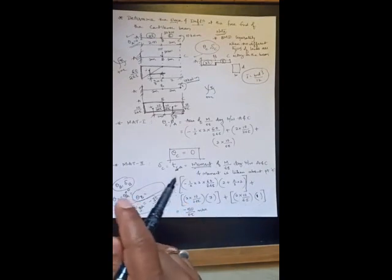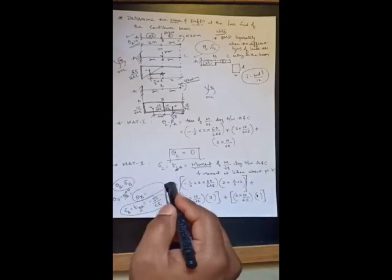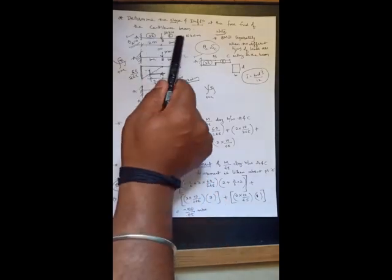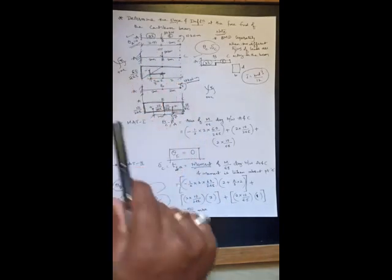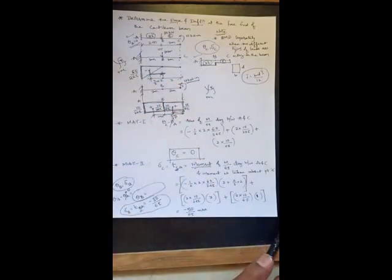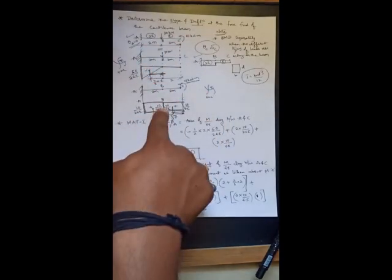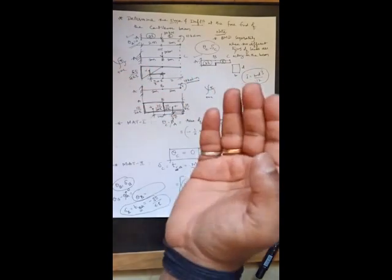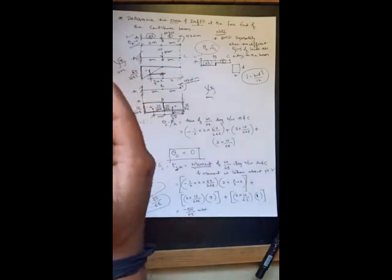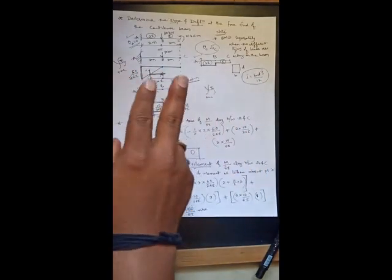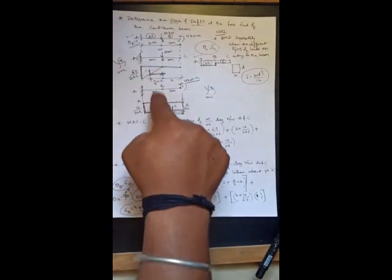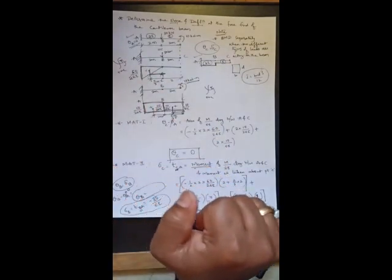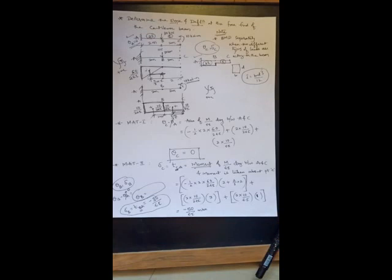Today's key understanding: whenever there are two different types of loadings in the same problem — concentrated load and UDL, or UDL and external moment, or external moment and concentrated load — you need to draw the bending moment diagram separately for each. According to the principle of superposition, add them together. We will solve a UDL problem in the next class.